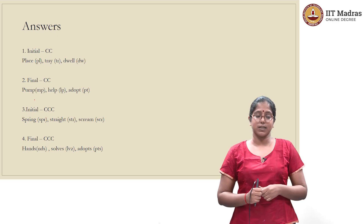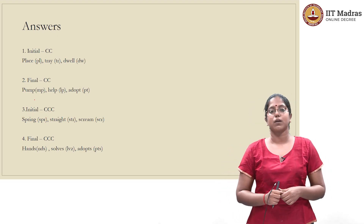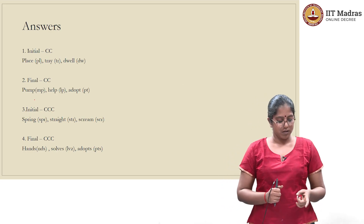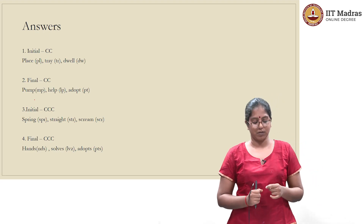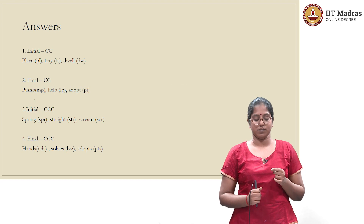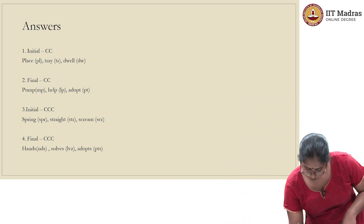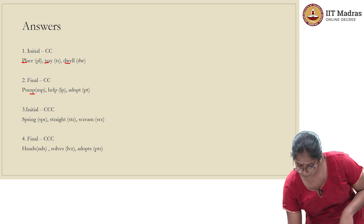Words with a consonant cluster CC at the final position: pump — 'm' and 'p'; help — 'l' and 'p'; adopt — 'p' and 't'. Let me mark them for you: place, tray, dwell have initial CC clusters; pump, help, adopt have final CC clusters.